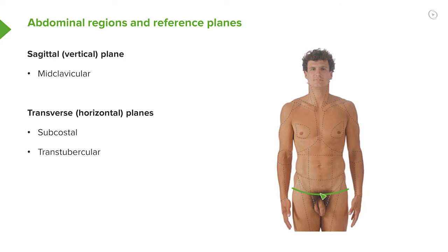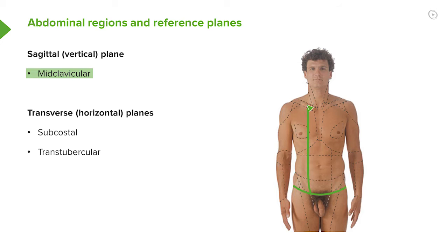We can create a sagittal or vertical plane that runs down. If we look up here, we have our two clavicles, and if we look at the mid-clavicular line, this is a line which runs all the way down from the clavicle to the midpoint of the inguinal ligament. The inguinal ligament runs in this direction, and we have this mid-clavicular line running all the way down. We have one on the right side and one on the left side.